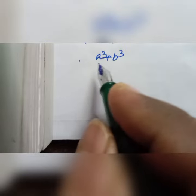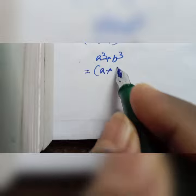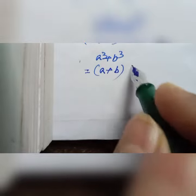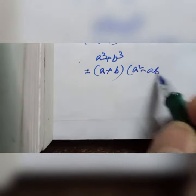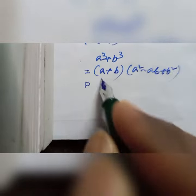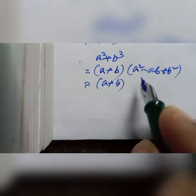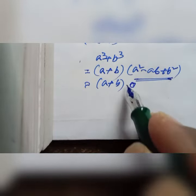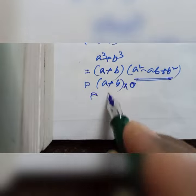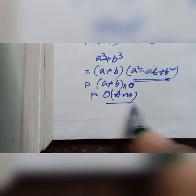Now, what is the value of a cube plus b cube? Using the identity, a cube plus b cube equals a plus b multiplied by a square minus ab plus b square. Since a square minus ab plus b square equals 0, the answer is 0.